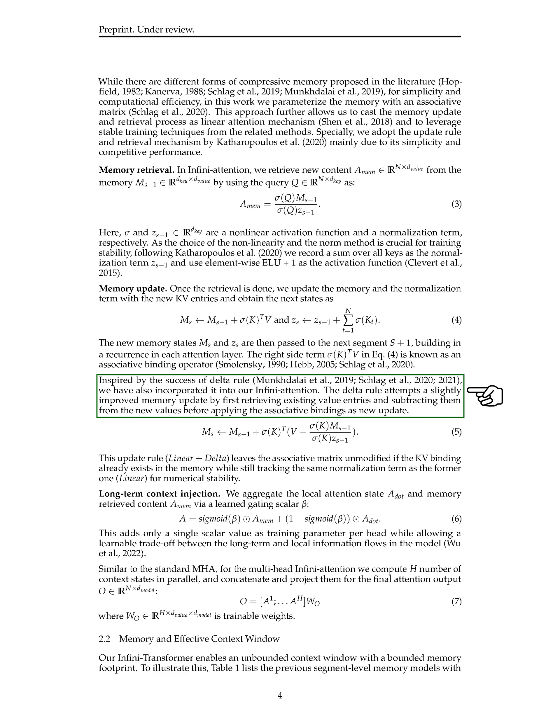We also incorporate the delta rule into our InfiniAttention, inspired by its success in memory update tasks. This rule improves memory update by first retrieving existing values and then applying associative bindings to update the memory, ensuring stability during training and leaving the associative matrix unchanged if the key-value binding already exists in memory. To inject long-term context, we combine the local attention state A_dot and the memory content A_mem using a learned gating scalar beta, allowing for a trade-off between long-term and local information flows with minimal additional parameters per head.